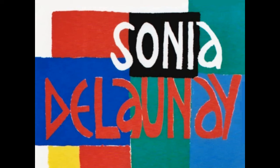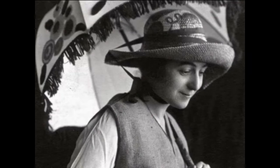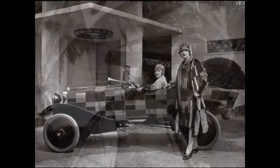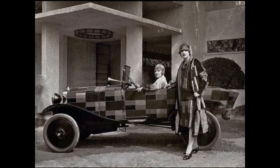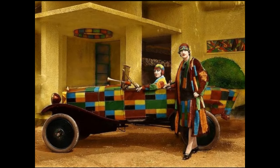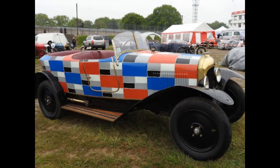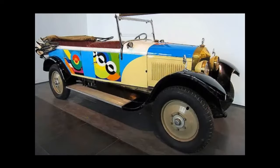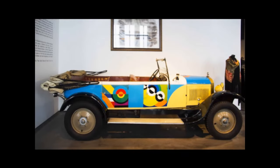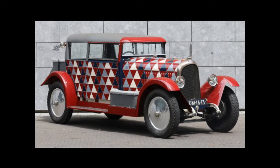Sonia Delaunay was an artist who was known for her use of geometric shapes and designs in fashion, painting and textiles. In 1924 she designed a pattern with geometric shapes and bright colors that was meant to be the paint design for the Citroën B12. Throughout the 1920s and beyond she included automobiles as a canvas for her modern art style. These are but a few of her stunning designs.